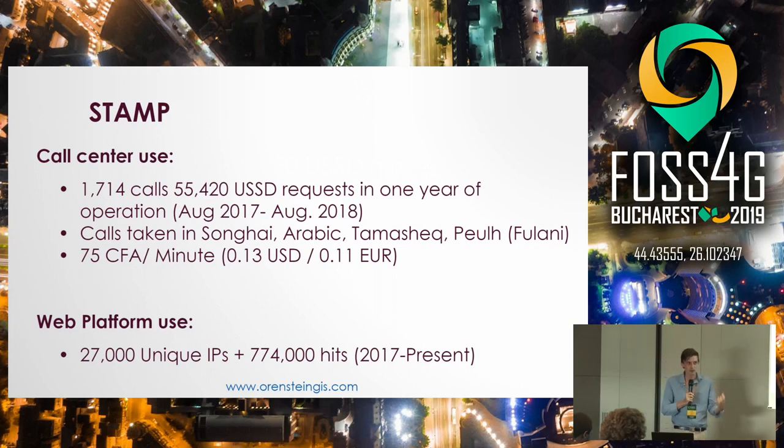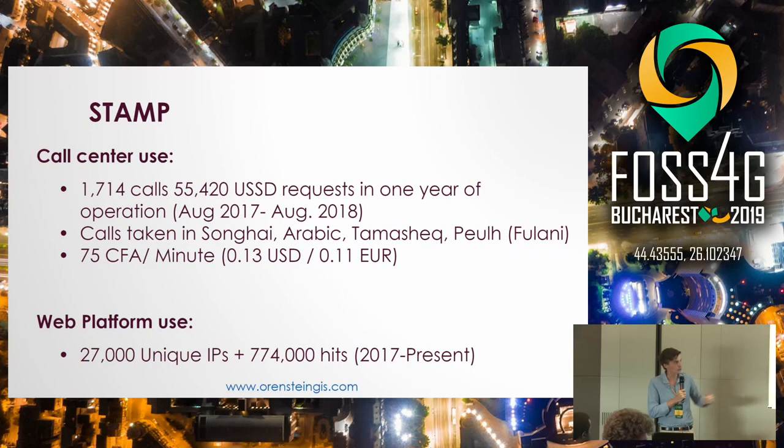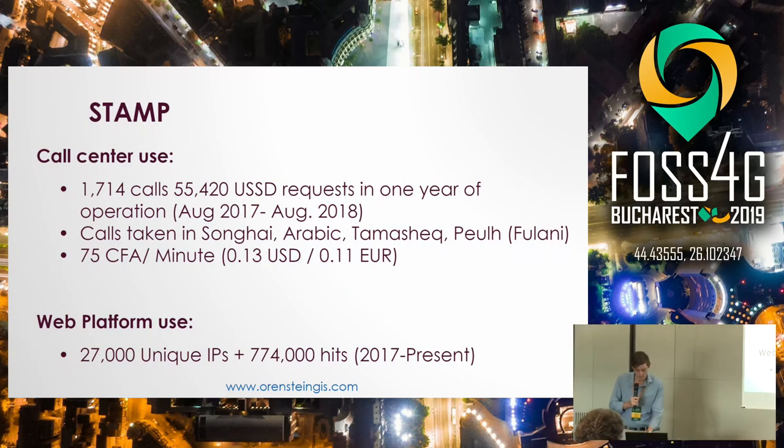What's really interesting is that it provides a lot of information that technicians have had access to for quite some time — pasture, water, price data — and makes it accessible in a very accessible medium. There's a lot of work being done developing applications that smartphones can access to provide meteorological data to farmers and herders, but in a place like Northern Mali where you don't have widespread 3G, and where you're dealing with a population that has low literacy rates, that solution often isn't applicable. As for the web platform, it's had 27,000 unique IPs and 774,000 hits since 2017.